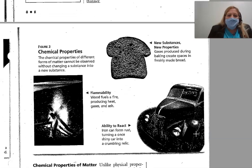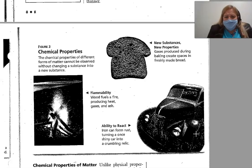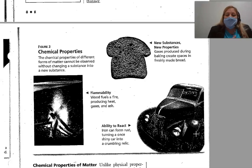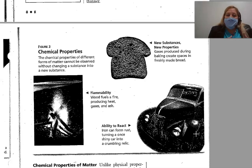Chemical properties. The chemical properties of different forms of matter cannot be observed without changing a substance into a new substance — we're making a new substance. Flammability: wood fuels a fire, producing heat, gases, and ash. Here's the key difference: if I freeze water, I can thaw it out and it becomes water again — ice can go back and forth. But if I burn a log, I cannot get the log back. It has actually changed its substance — it's now ash. It can't become wood again. So that makes it a chemical property.